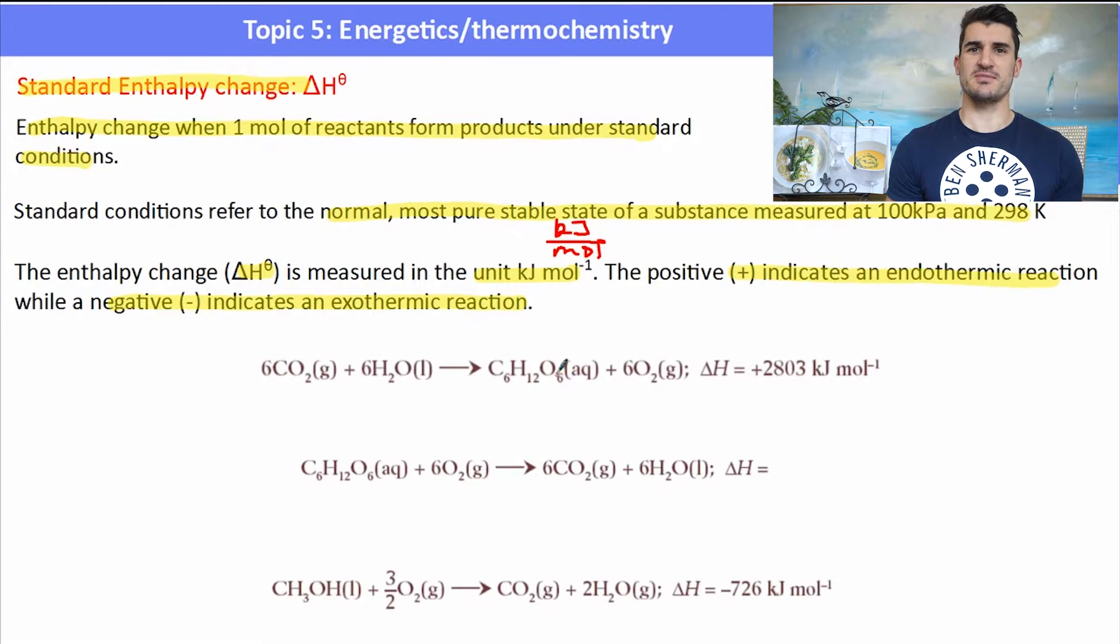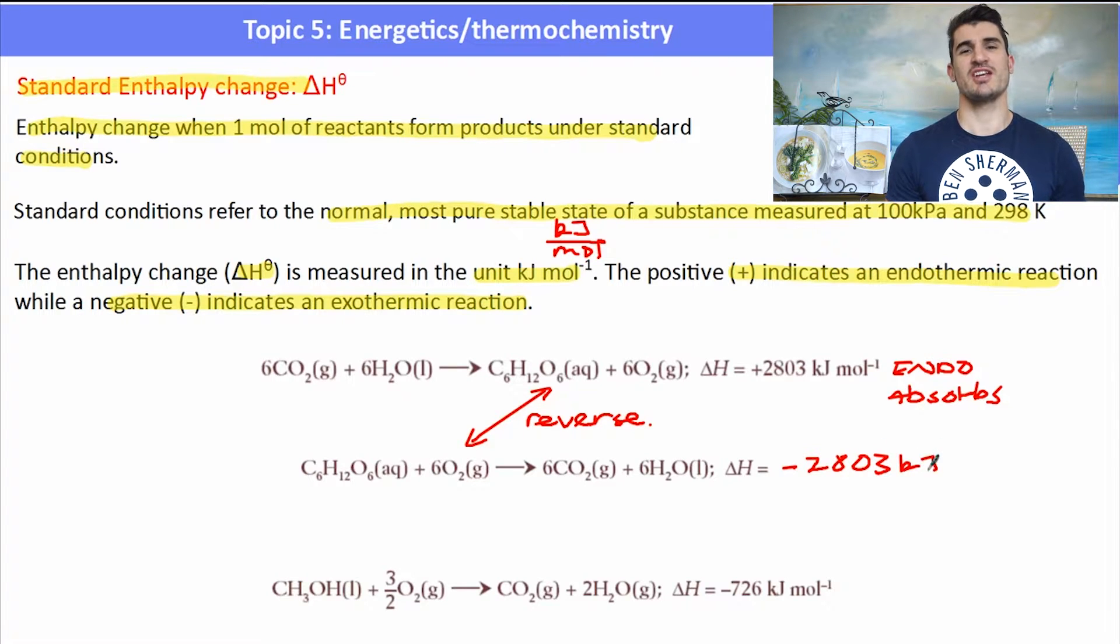So in the first equation, we have 6 moles of carbon dioxide plus 6 moles of water forms 1 mole of glucose plus 6 moles of oxygen. In that process, we absorb 2,803 kJ per mole. In the second equation, we have 1 mole of glucose plus 6 moles of oxygen turns to 6 moles of carbon dioxide and 6 moles of water. Now it's the exact reverse of the reaction above. So if we reverse a reaction, we actually just change the delta H.